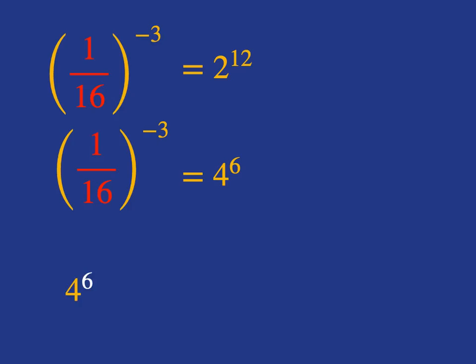4 to the 6, you know 4 is just the same as 2 squared. So 4 to the 6 is the same as 2 squared to the 6. And 2 squared to the 6, if we apply our exponent rule, is 2 to the 2 times 6, it's 2 to the 12. So we can see just in another way, 4 to the 6 is the same as 2 to the 12.